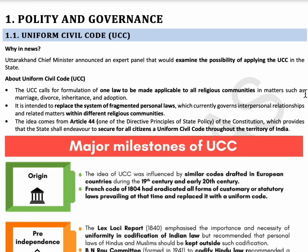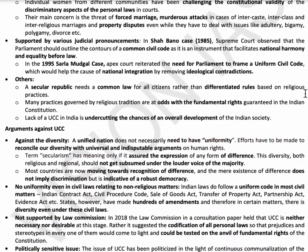The next topic is the Uniform Civil Code. It is mentioned in Article 44 under Directive Principles of State Policy. The Uniform Civil Code means one law for the entire country. At present, different religious communities have different laws. The Uniform Civil Code promotes one law for the entire country in matters of marriage, divorce, inheritance, and adoption. Till now, only Goa has implemented the Uniform Civil Code.